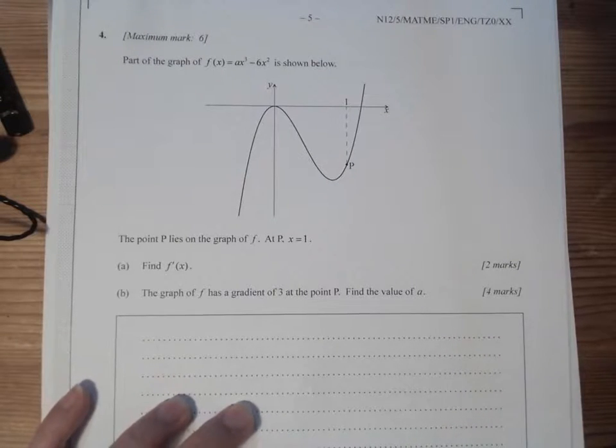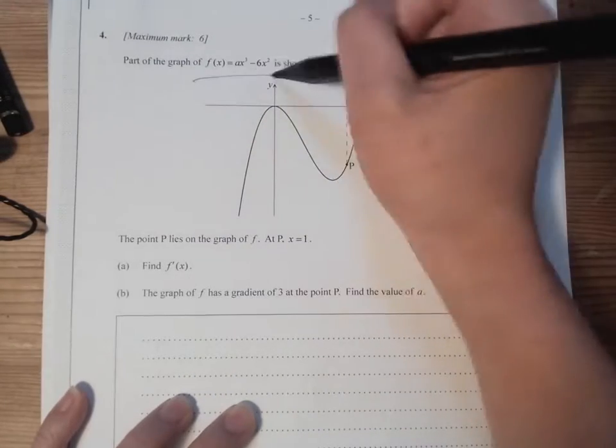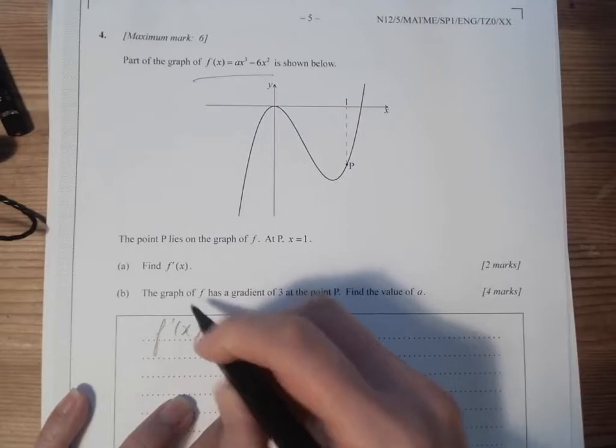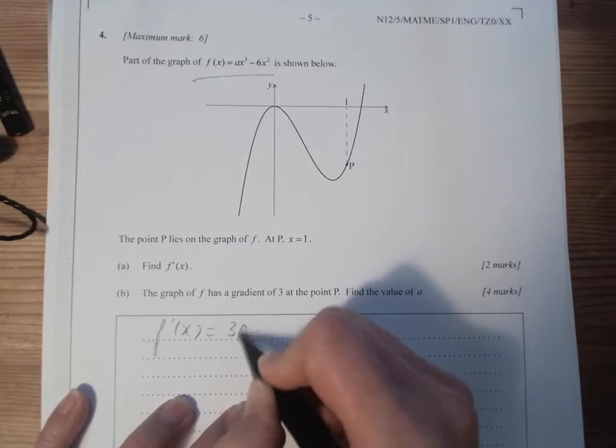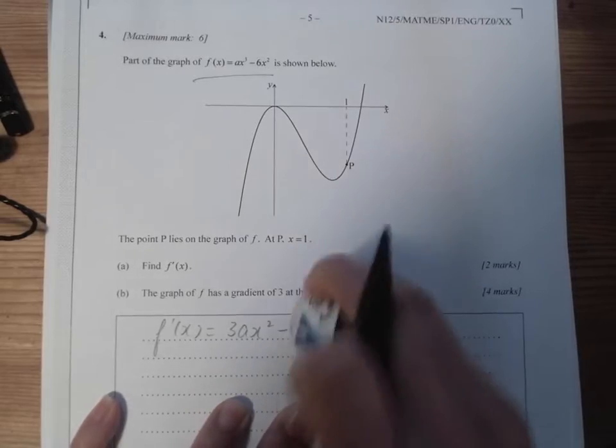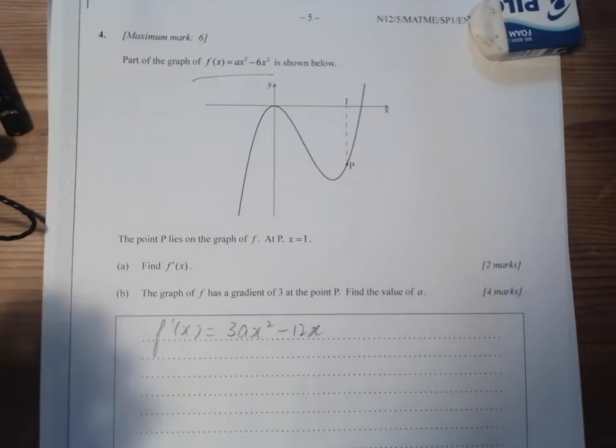This is yet another question I really like. We got a curve here, we got a point that lies on the graph, and we've got a function. So we differentiate it: f'(x) equals 3ax² minus 12x. Nice and easy.